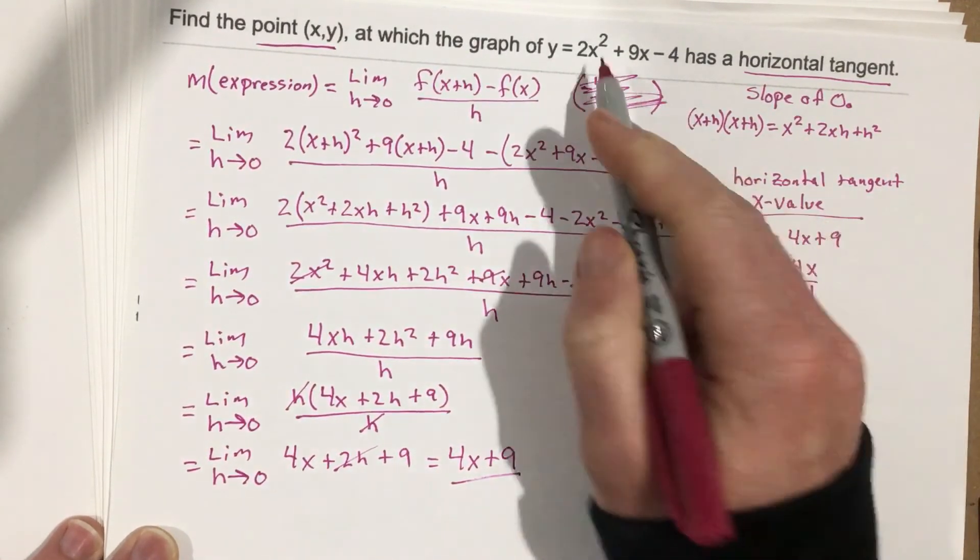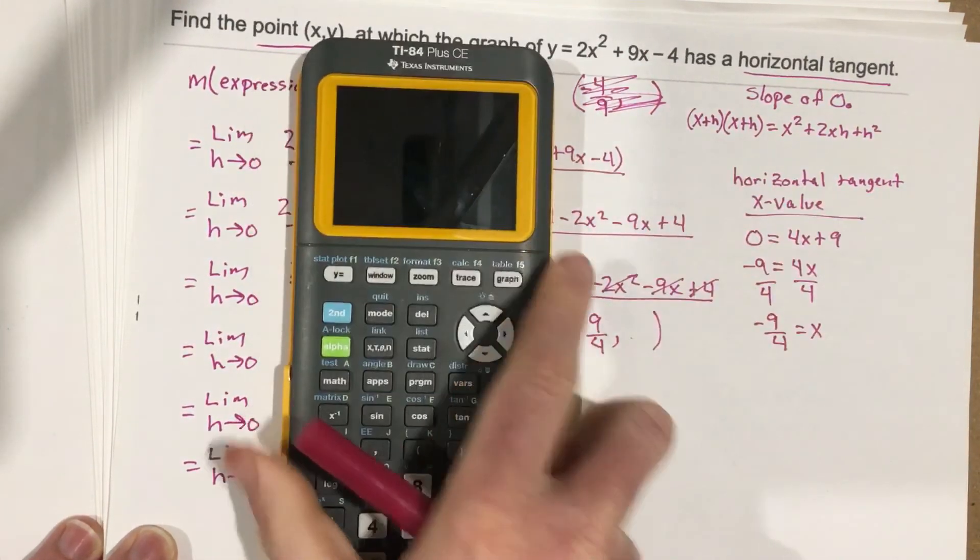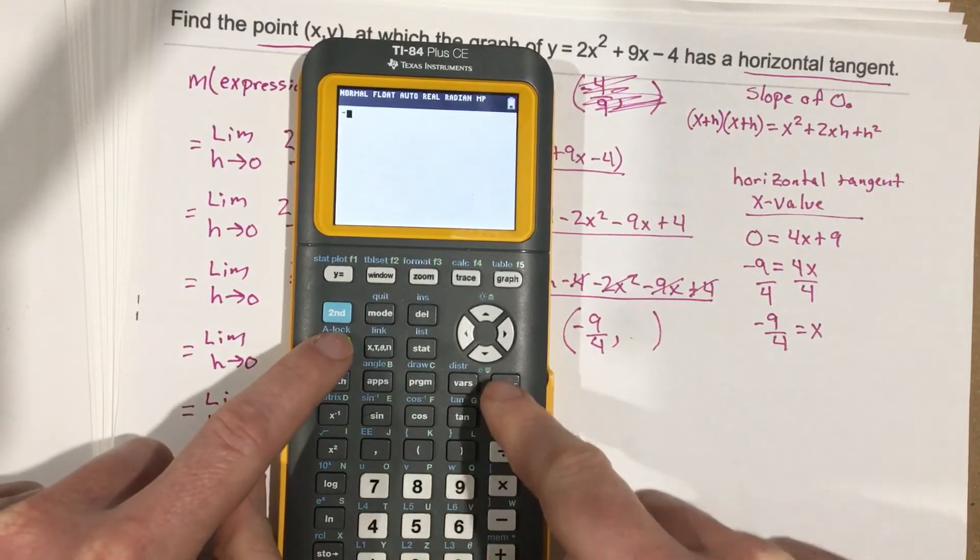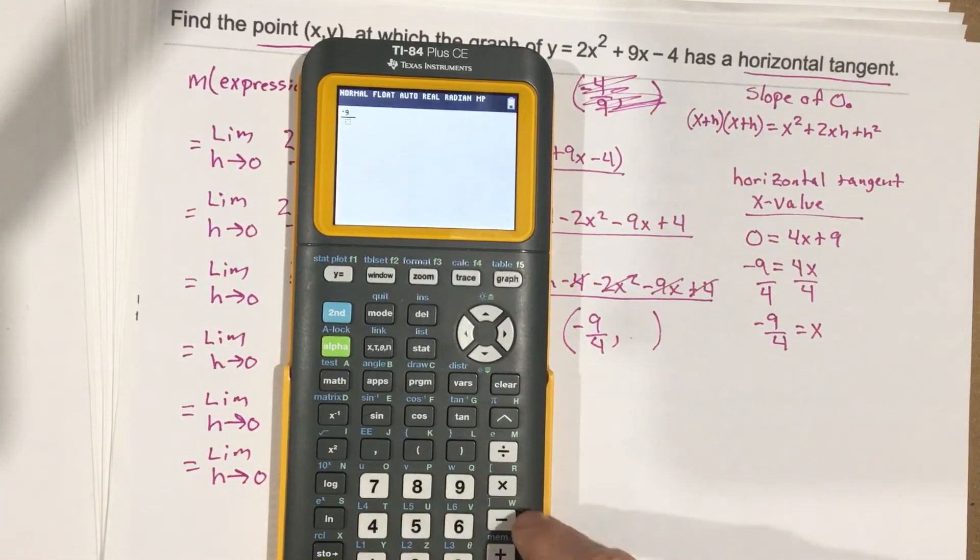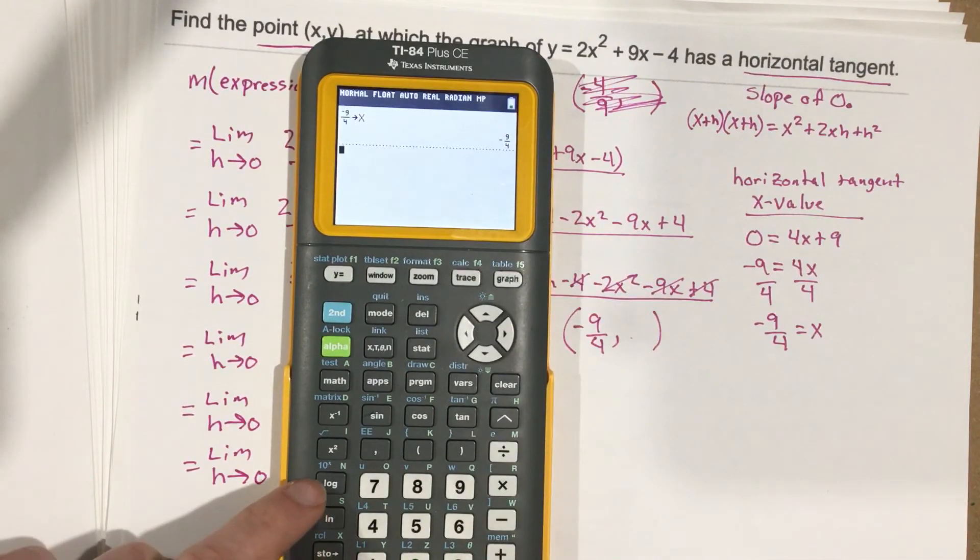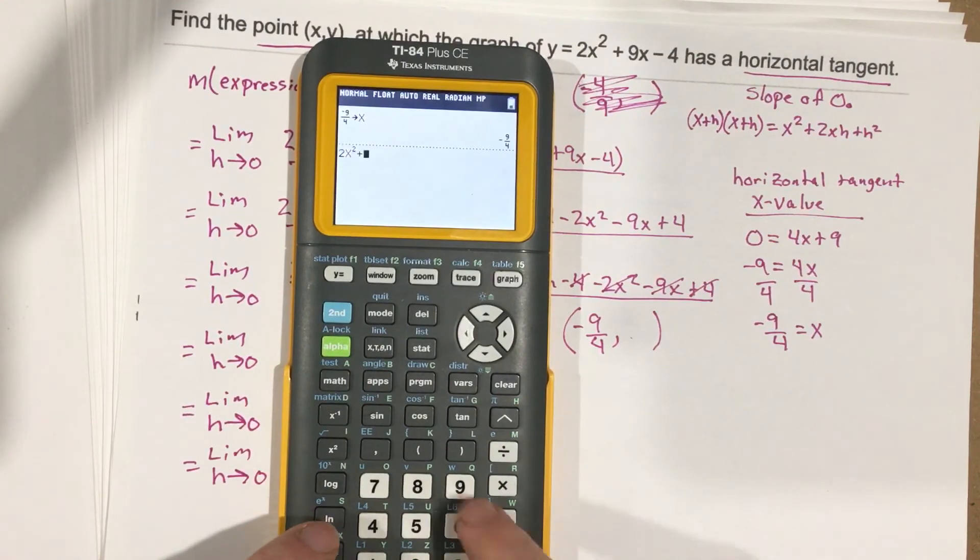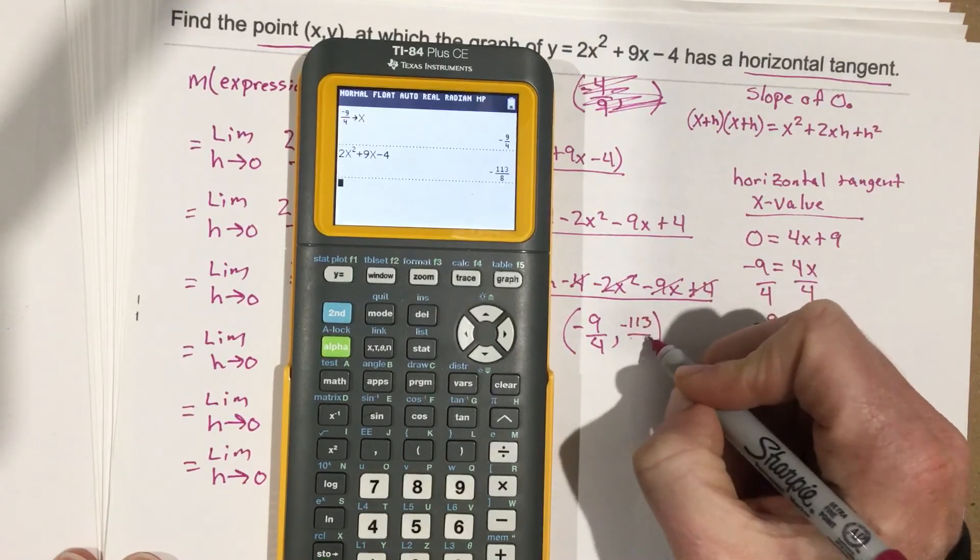How do I find the y value? Well, I plug it into the function itself. Actually, I'm going to use my graphing calculator to do this. It's going to make it easy. So we'll say negative 9, we're going to go alpha fraction, negative 9 over 4. Let's store that as x, and then let's write that function in there. So we have 2x² + 9x - 4.